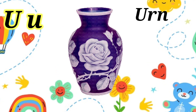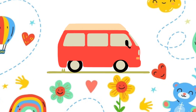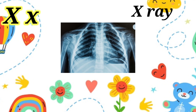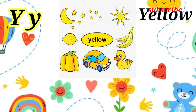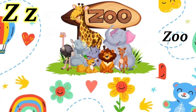U for Earn, V for Fan, W for Window, X for X-Ray, Y for Yellow, Z for Zoo.